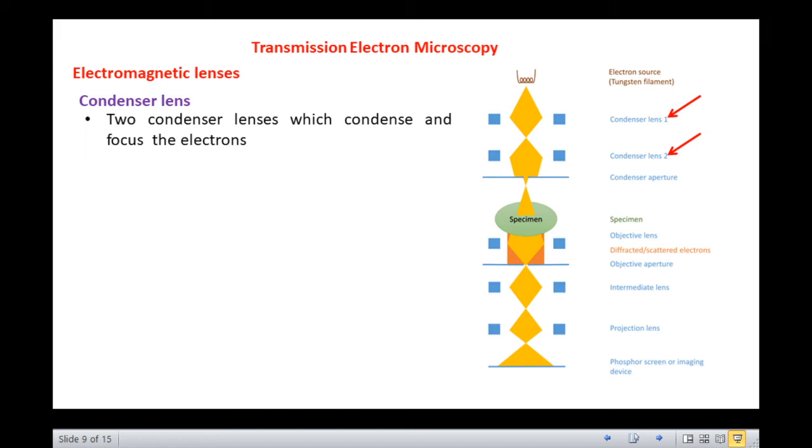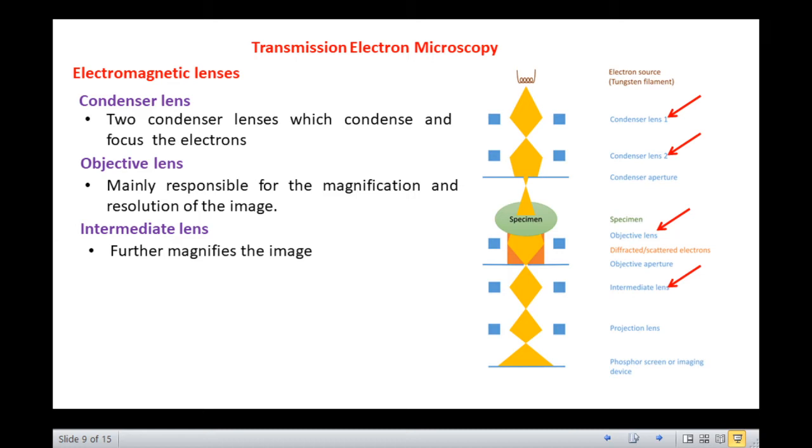The objective lens surrounding the specimen insertion area primarily focuses and initially magnifies the image. It is mainly responsible for the magnification and resolution of the image. The next lens is the intermediate lens. This lens further magnifies the image.